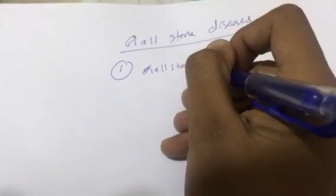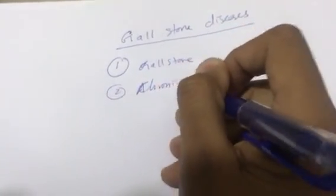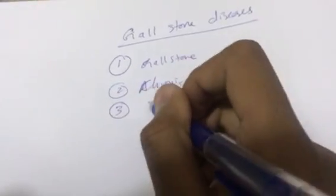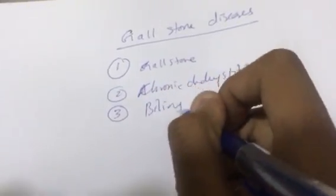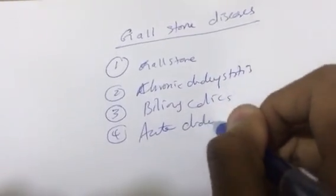Okay everyone, we'll talk about gallstone diseases. We have five important terminologies that we should differentiate between them. First, what do you mean by asymptomatic gallstone disease? What is the difference between this and chronic cholecystitis? We also have biliary colics and acute cholecystitis.